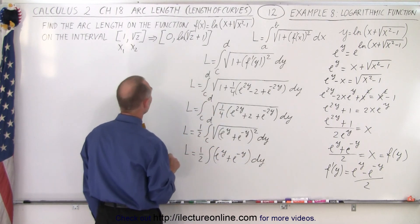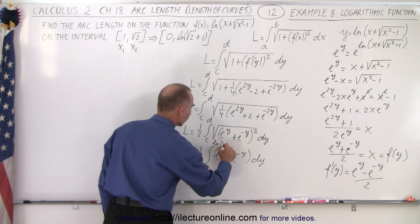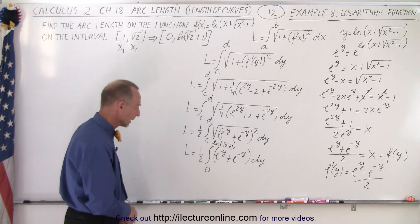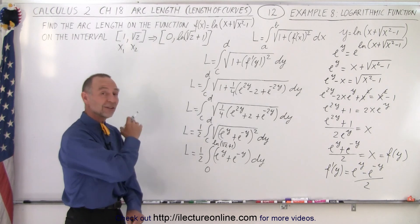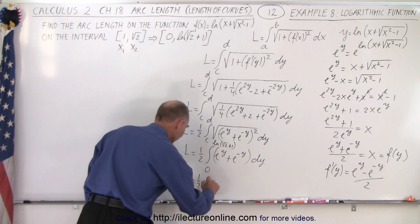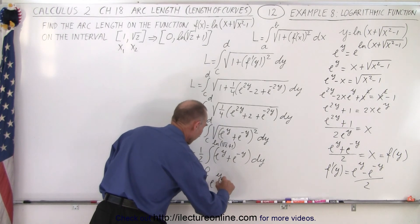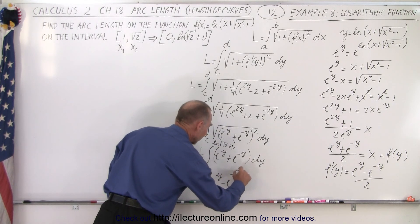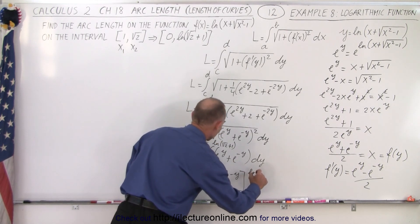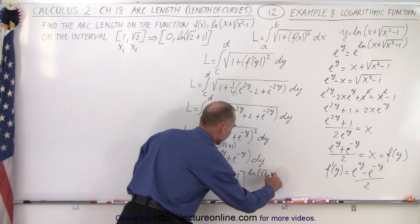The limits go from 0 to the natural log of the square root of 2 plus 1. That integral is much easier to integrate. So we end up with L equals one half times eʸ minus e to the negative y, evaluated from 0 to the natural log of the square root of 2 plus 1.